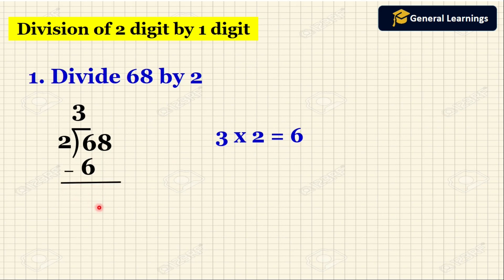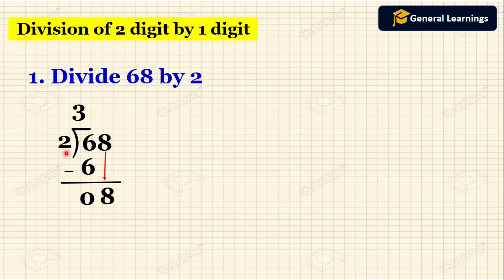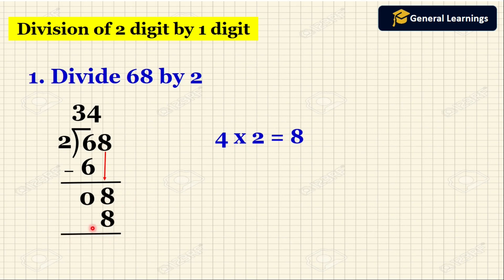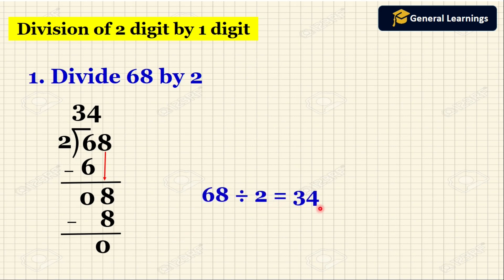Then we subtract, so we get the result as 0. Now we are moving to the next number which is 8. We bring down this 8 and write it next to 0. Now we are going to divide 8 by 2. The multiplication table of 2 tells us 4 twos are 8, so we write 4 above next to 3. We write the product 8 below, draw a line, subtract, and get the answer as 0. So when we divide 68 by 2, the quotient is 34 and the remainder is 0.